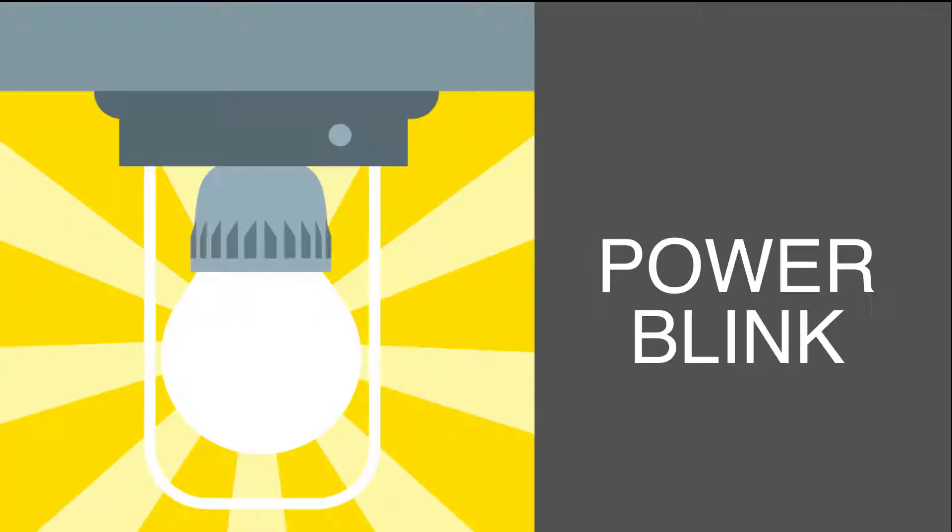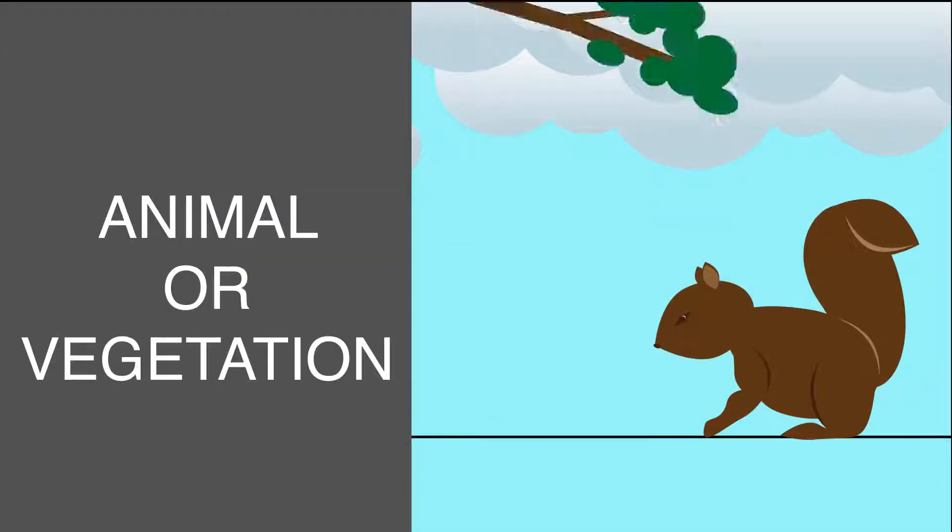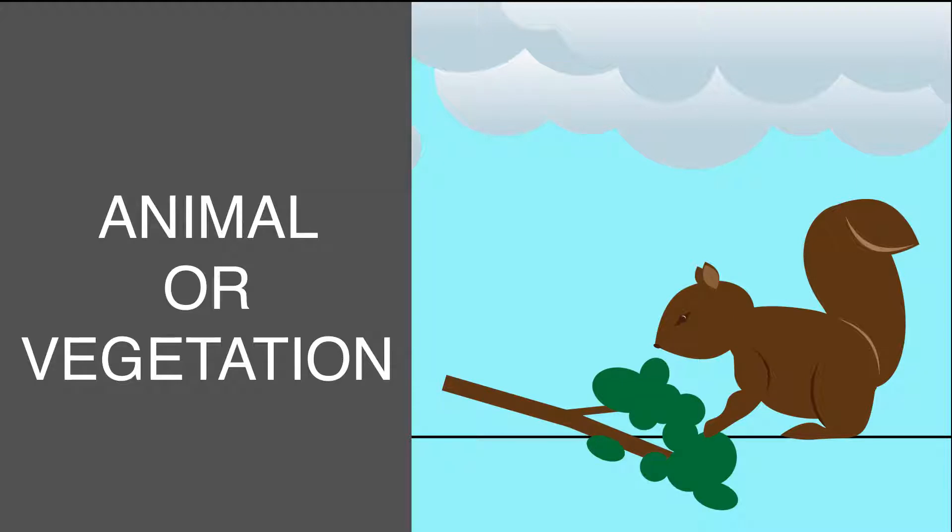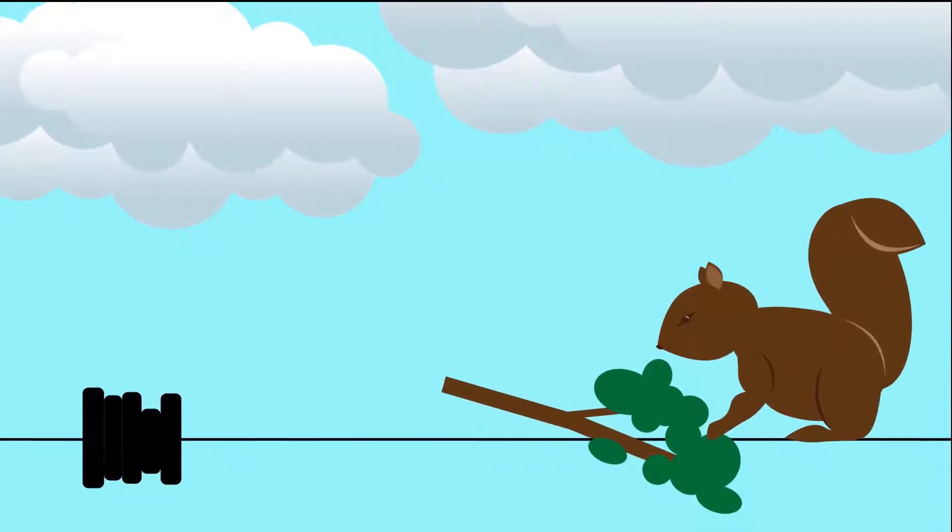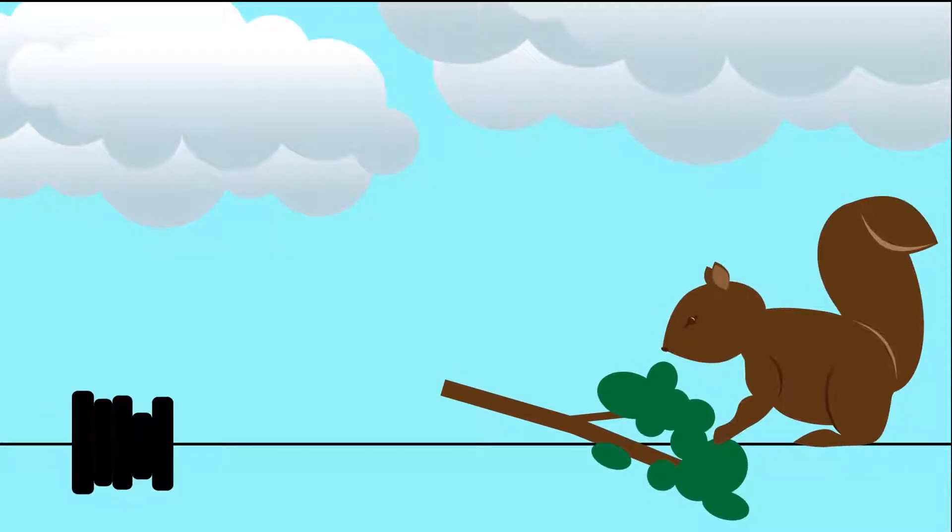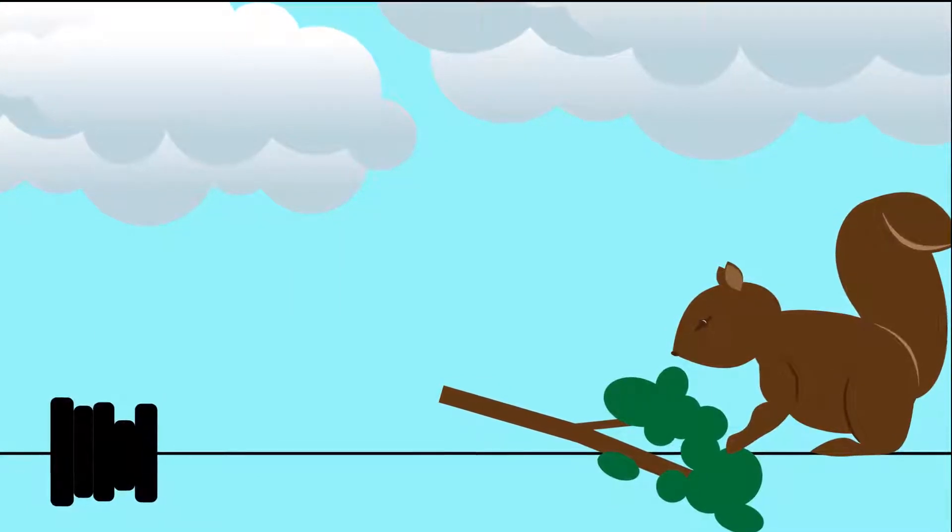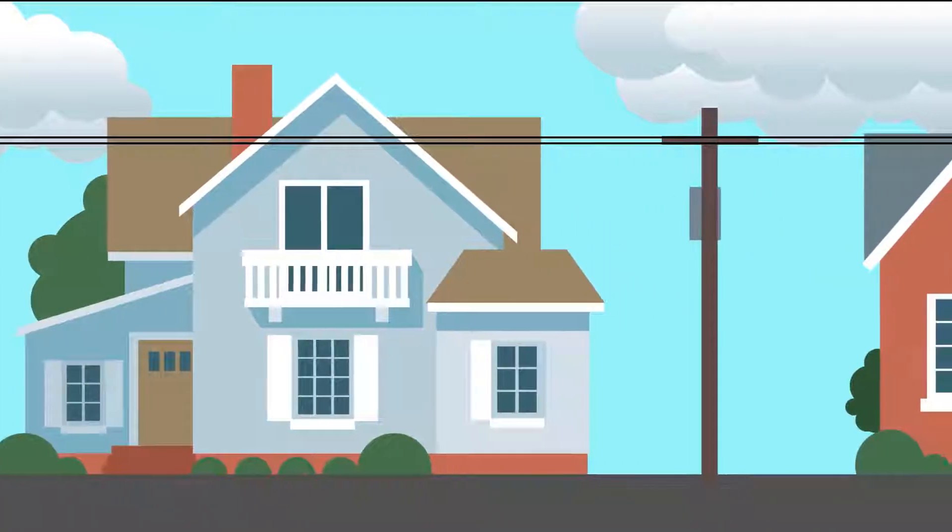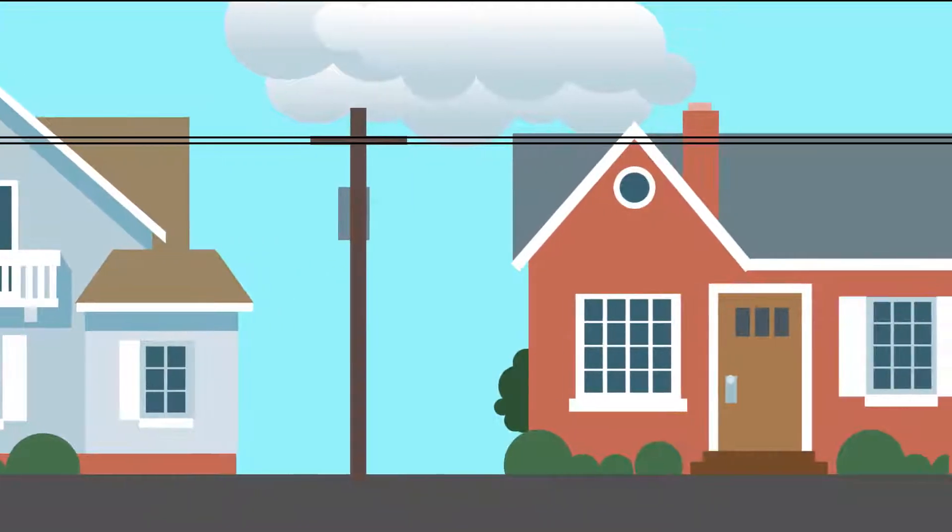Has your power ever blinked on and off for a few seconds? This is known as a power blink. A power blink occurs when an animal or vegetation comes in contact with the power line that serves your home. When this happens, protective equipment that acts like a circuit breaker interrupts the flow of power for a split second to reduce the possibility of damage to the electrical system. Many times, the problem on the power lines can be isolated, which limits the number of members without electricity.